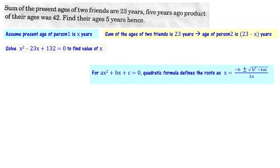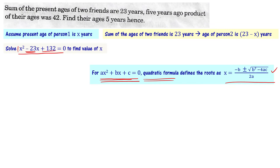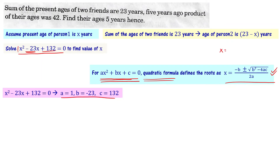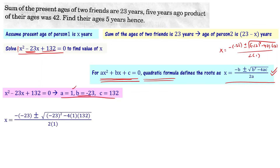To solve x² − 23x + 132 = 0, we use the quadratic formula. For a quadratic equation ax² + bx + c = 0, the roots are x = (−b ± √(b² − 4ac)) / 2a. Comparing with our equation, a = 1, b = −23, c = 132. Substituting: x = (−(−23) ± √((−23)² − 4·1·132)) / (2·1), that is x = (23 ± √(529 − 528)) / 2.